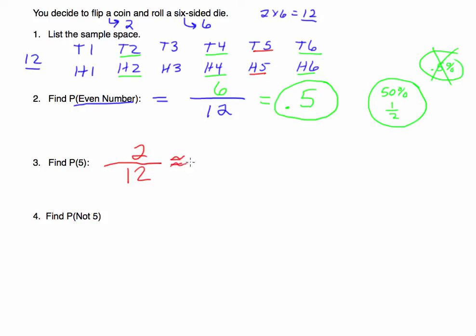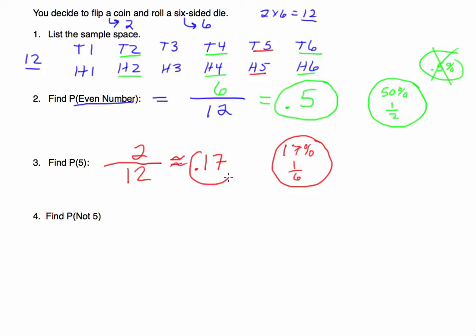Putting two over twelve in a calculator gives approximately 0.17. Written as a percent, that's approximately seventeen percent. As a reduced fraction, it would be one over six. These are the different ways to present the information, but if asked just for the probability, 0.17 is the preferred form.